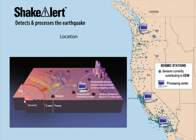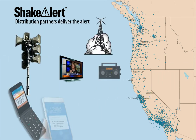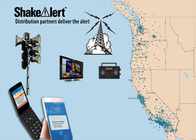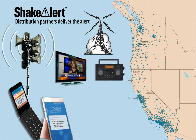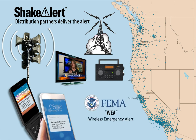Processing centers estimate the earthquake's location, magnitude or size, and expected strength of shaking. ShakeAlert then works with distribution partners to rapidly deliver alerts to people through public address systems, TVs, radios, cell phone apps, smartphone operating systems, and through FEMA's Wireless Emergency Alert System, which is also the source of AMBER Alerts.